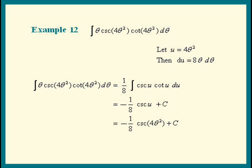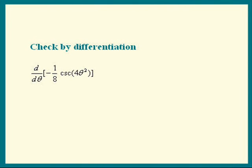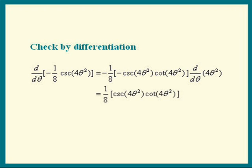Remember, we can always check our answer by differentiating. So let's do that. We get negative 1 eighth. That's the constant factor. Differentiate cosecant of anything, we get negative cosecant of that thing, cotangent of that thing, times the derivative of that thing. The negative signs cancel, and the derivative of 4 theta squared is 8 theta. The eights cancel, and there's our integrand.